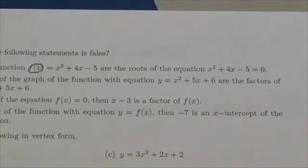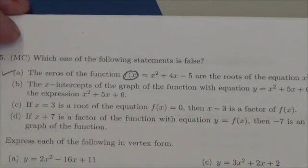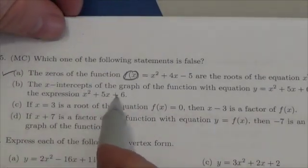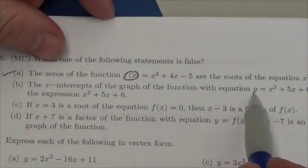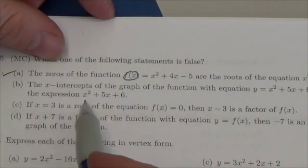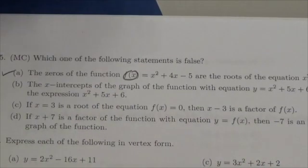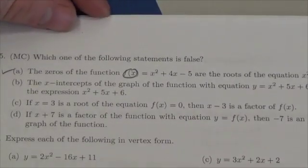Those are the same thing, two different ways of saying the same thing. Question B says the x-intercepts of the graph of the function with equation y equals x squared plus 5x plus 6 are the factors of the expression x squared plus 5x plus 6. The wording of that one is awkward to say the least, very awkward.